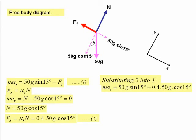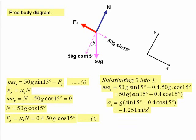We now substitute equation 2 into equation 1 which gives us that ma_x is equal to 50g sin 15 minus 0.4 times 50g cos 15. And just doing the algebra now gives us the expression for the acceleration in the x direction as minus 1.251 meters per second squared. Negative sign because it's slowing down.